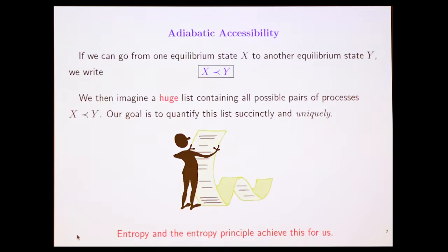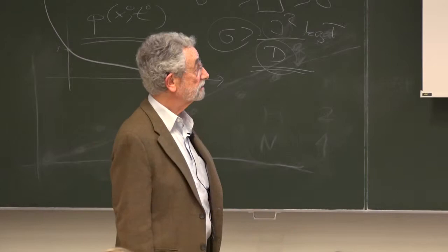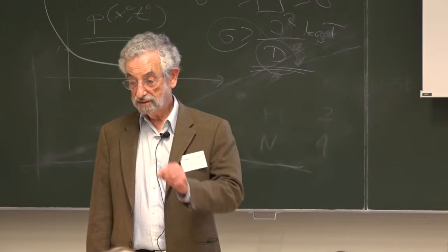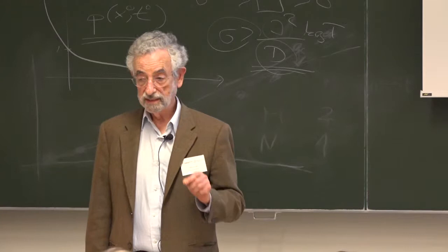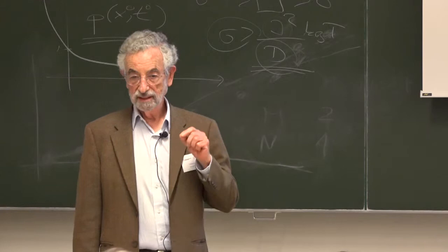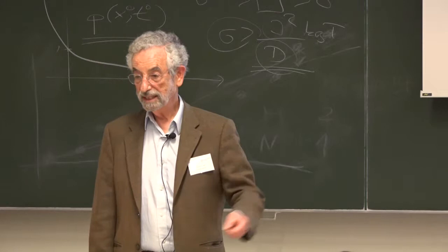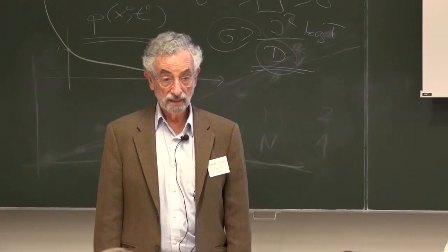So we imagine all possible states of all possible systems. Equilibrium states, I should add, so entropy for us really has something to do with equilibrium states. Then we imagine a huge list containing all possible pairs of processes. So you imagine all possible systems, for example, this and whatever, a piece of lead, or all possible systems in all possible equilibrium states. That's the universe we're talking about. And we write down all the x's preceding y's. Now, if we lived in a universe in which you could go from x to y, and always from y to x, it would be a very uninteresting universe.